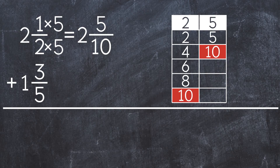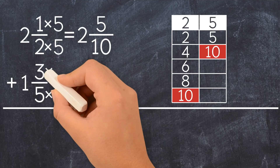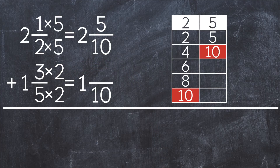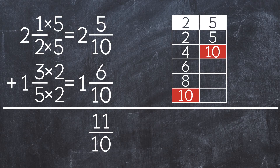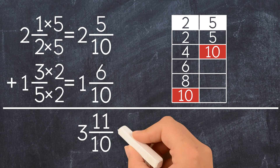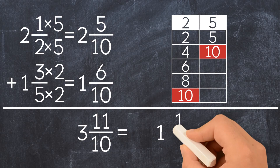Now let's do the same for the second mixed number to get 1 and 6 tenths. Now we can add. The fractions give us 11 over 10, so this is not our final answer. We can turn 11 over 10 into a mixed number by dividing 11 by 10. We get 1 and 1 over 10. Adding that to 3, we get 4 and 1 tenth.